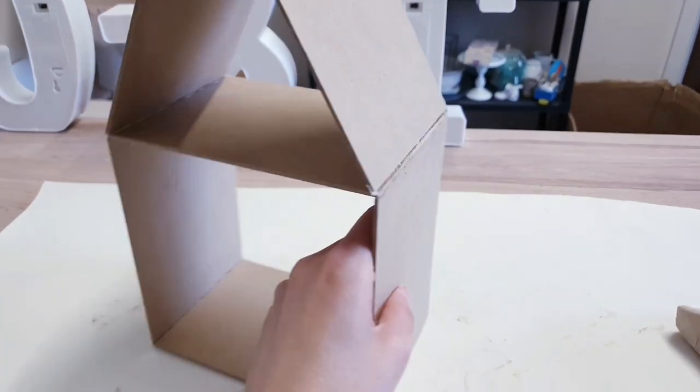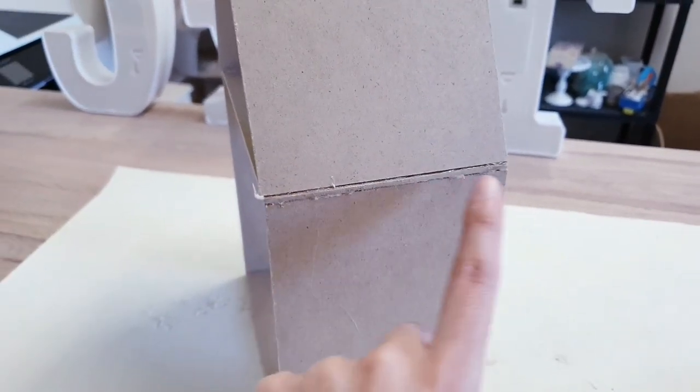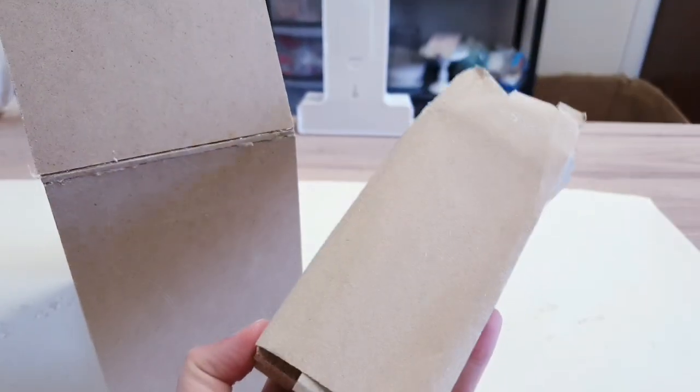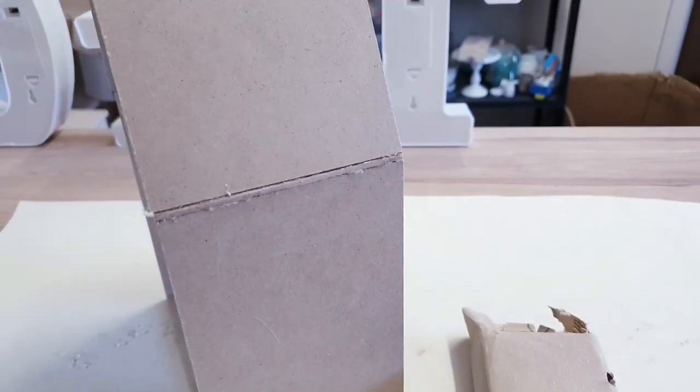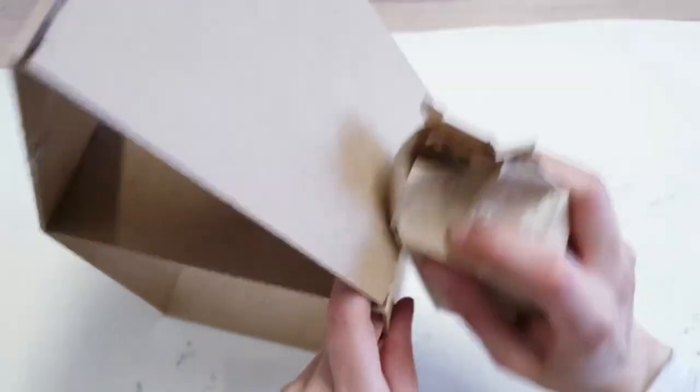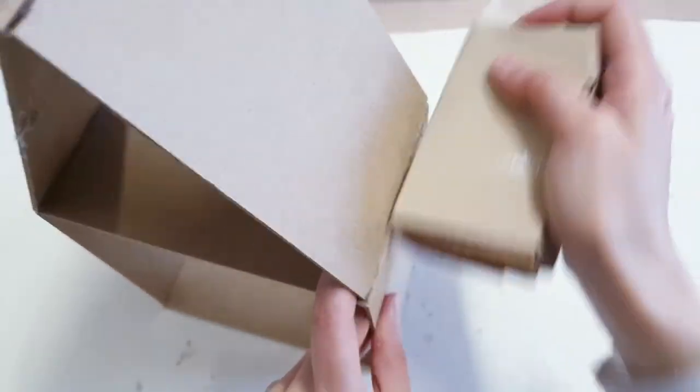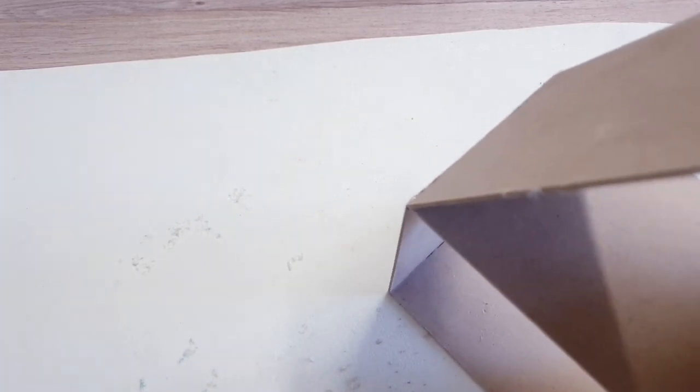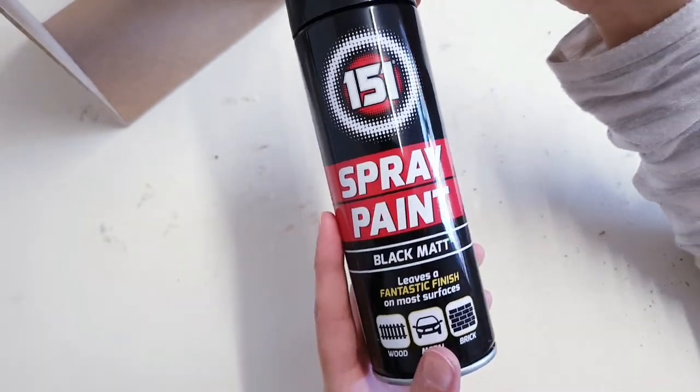Okay, so once you've got that all ready, see how I've got a bit of glue that's coming out? If you do have any little bits like that, then you can just sand that off and make sure it's all neat. The next thing we're going to do is spray paint it black.